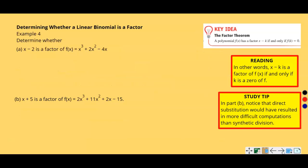Example four: determining whether a linear binomial is a factor. In the last section we did polynomial division, so this ties back to that. A binomial is a factor if it divides evenly and gives a remainder of zero. The factor theorem states: a polynomial f(x) has a factor (x − k) if and only if f(k) = 0. In this case, the factor is (x − 2), so k equals 2.